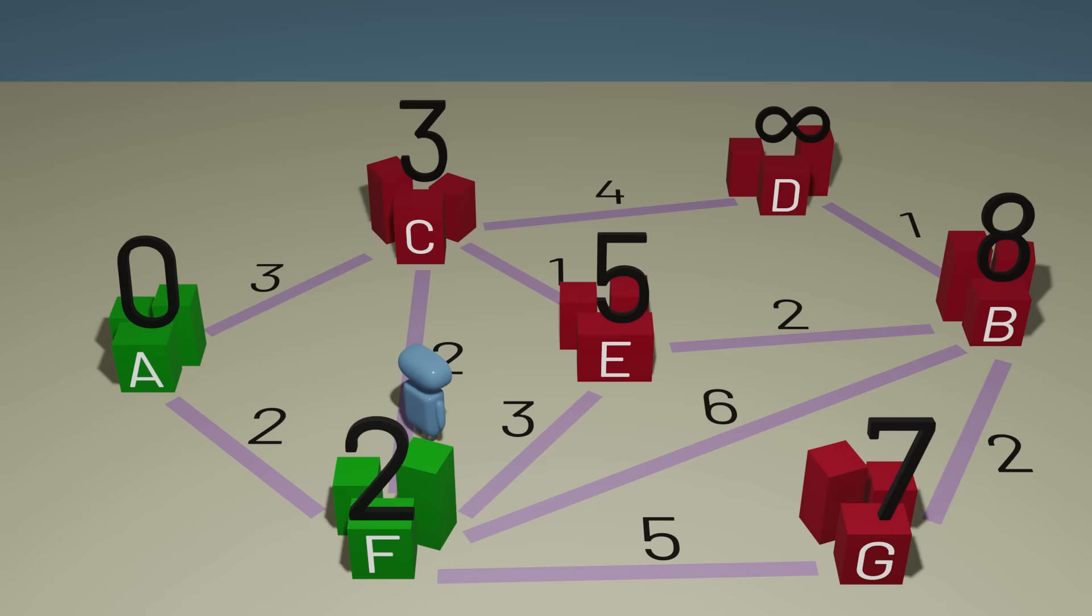We can also get to town C in four minutes. Two minutes to go from A to F, and then another two to go from F to C. But four minutes is actually more than our current best estimate for town C, which is three minutes. So we don't want to update anything here. Remember, for each town, we want to store our best estimate for the shortest amount of time required to get there. So let's keep going.